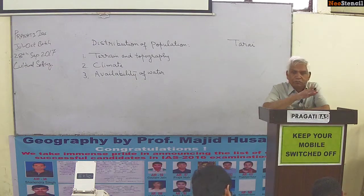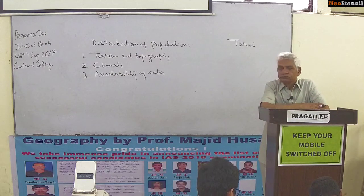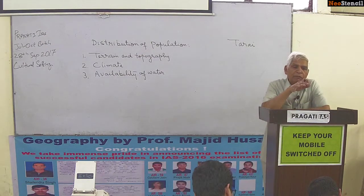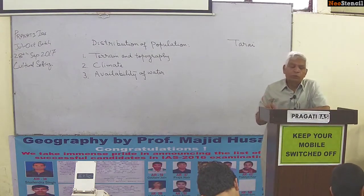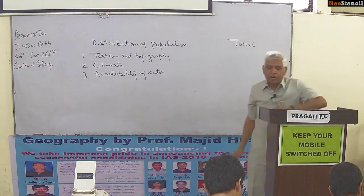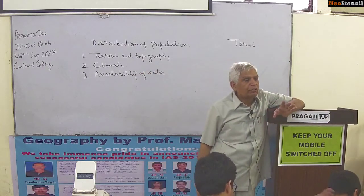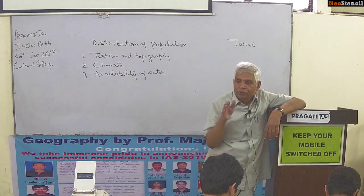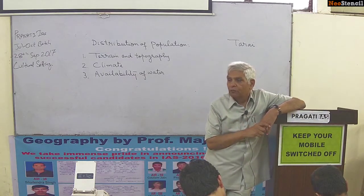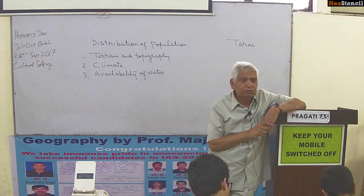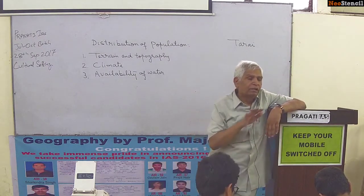Wherever there is more water — both surface and underground — more people prefer to stay. Areas where the underground water table is absent or surface drainage is not perennial are sparsely populated. The rivers of the northern plains of India — the Ganga, Yamuna, Sutlej and their tributaries, and the Brahmaputra — are largely perennial and carry water almost throughout the year.